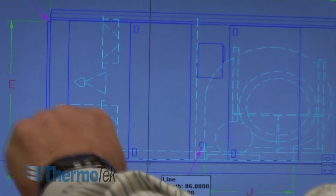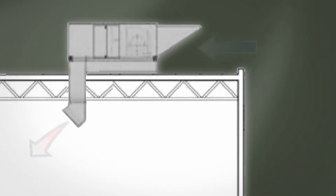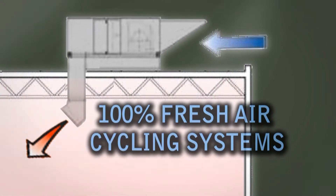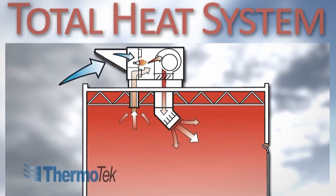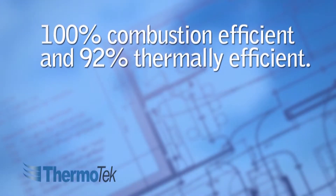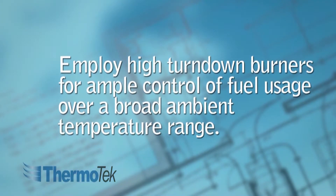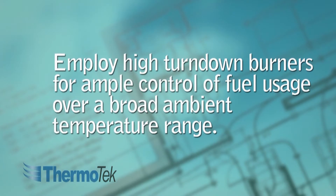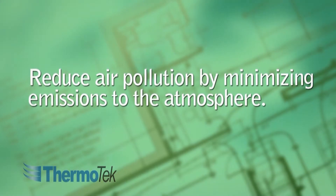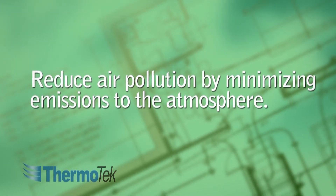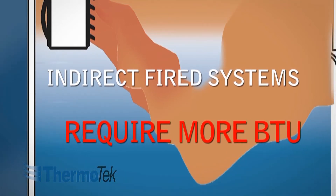Let's take a closer look at the two prominent systems currently used to heat large open space facilities: the 100% fresh air high temperature cycling system, and the recirculating system with pressurization, or the total heat system. Both systems are 100% combustion efficient and 92% thermally efficient. Both systems employ high turndown burners for ample control of fuel usage over a broad ambient temperature range, and both systems help to reduce air pollution by minimizing emissions to the atmosphere versus indirect fired systems that require more BTU for the same amount of heating.